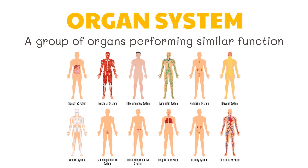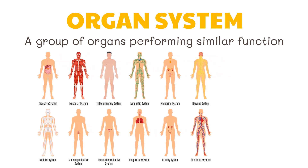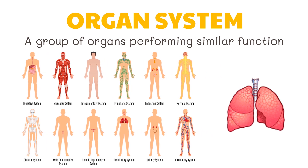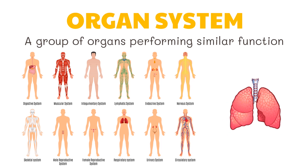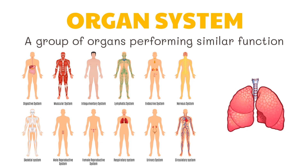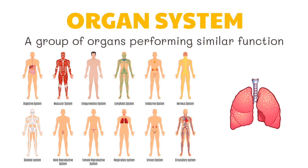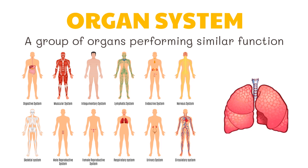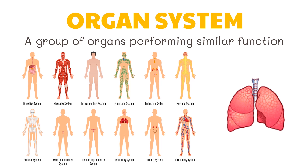An organ system is a group of organs performing a similar function; they work together to perform specific bodily functions. The respiratory system, for example, uses the lungs, airways, and respiratory muscles to inhale oxygen and release carbon dioxide. Physiologists study the function of the parts of the body as they work together, though physiologists can work at any level of biological organization and often answer questions related to organ systems.